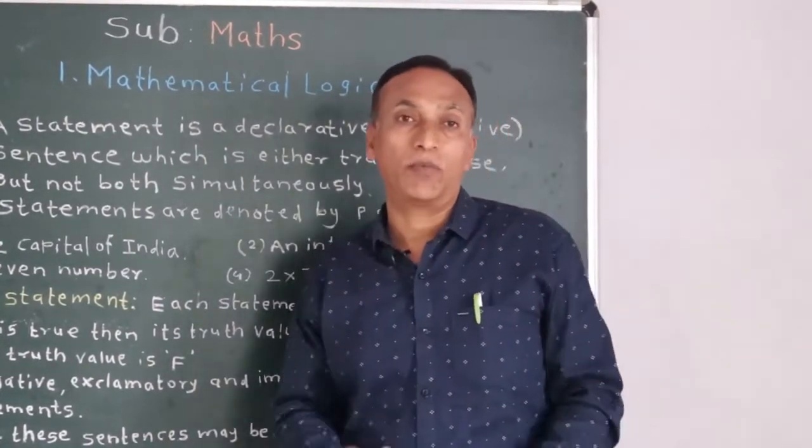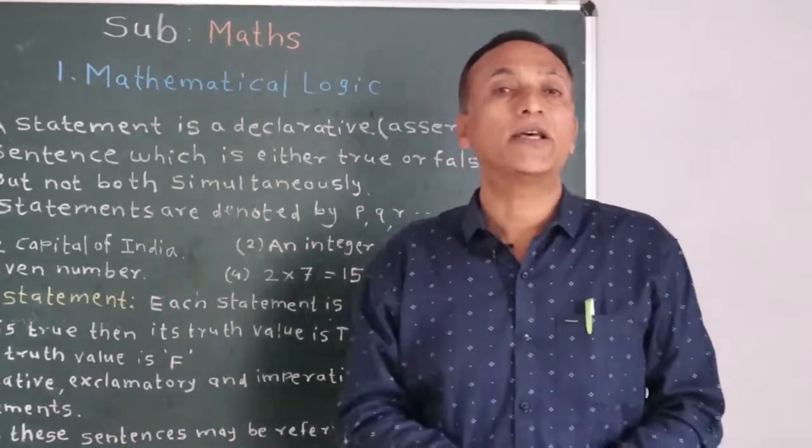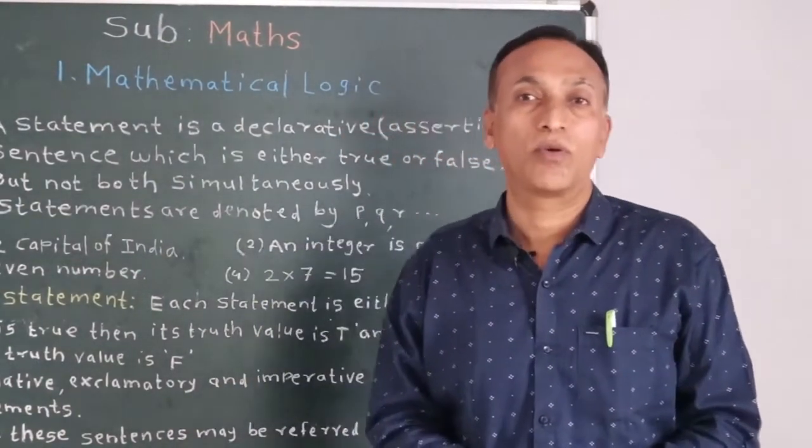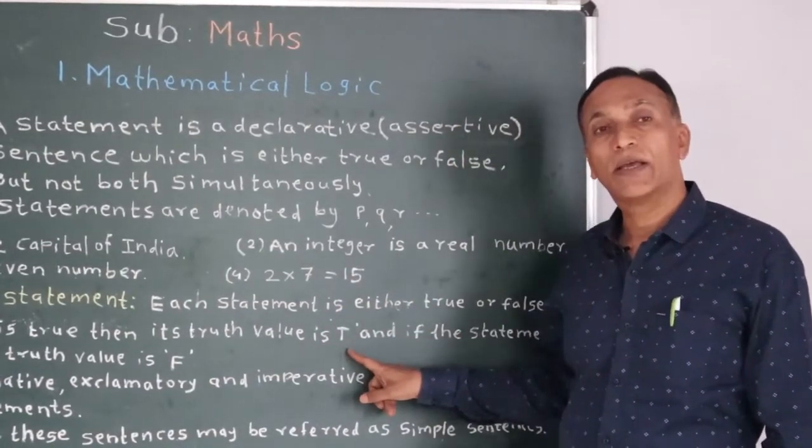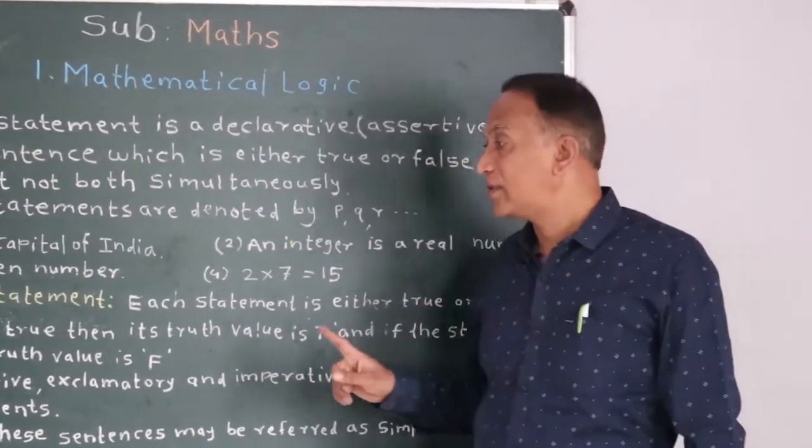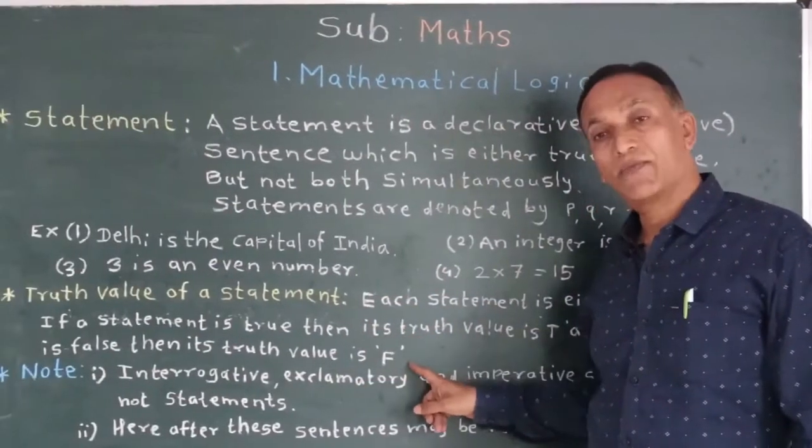Now truth value of a statement. Each statement is either true or false. If a statement is true then its truth value is denoted by T. And if a statement is false then its truth value is denoted by F.